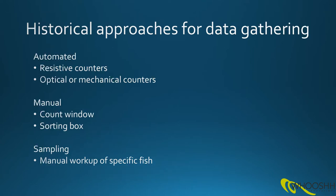Historically, there have been a number of different approaches for data gathering at fish ladders. Some of these are automated, like mechanical counters or resistive counters. Some of them require operator intervention, like a counter window or a sorting box. And some of them require that individual fish are taken out of the migrating population and worked up by hand.